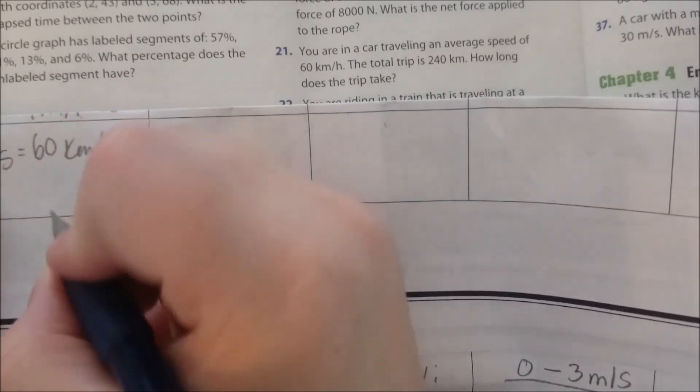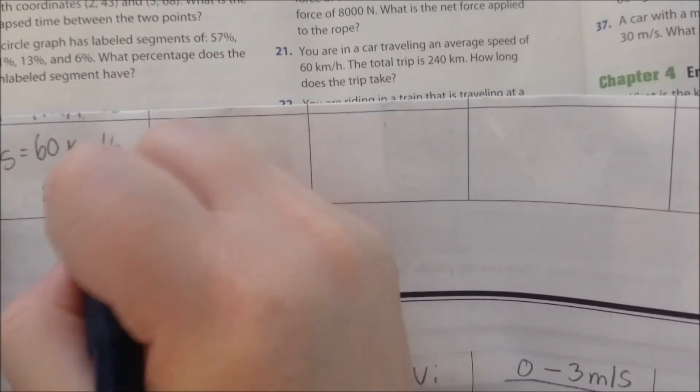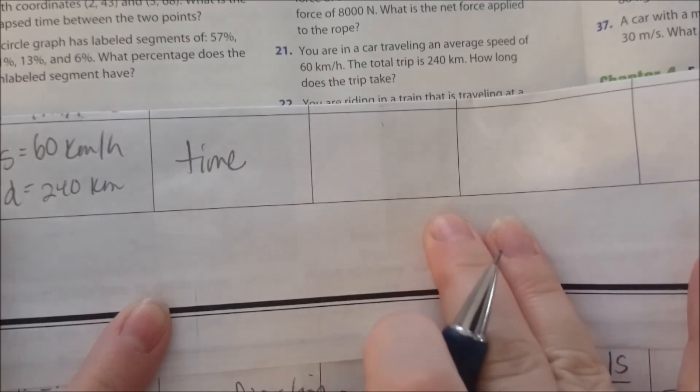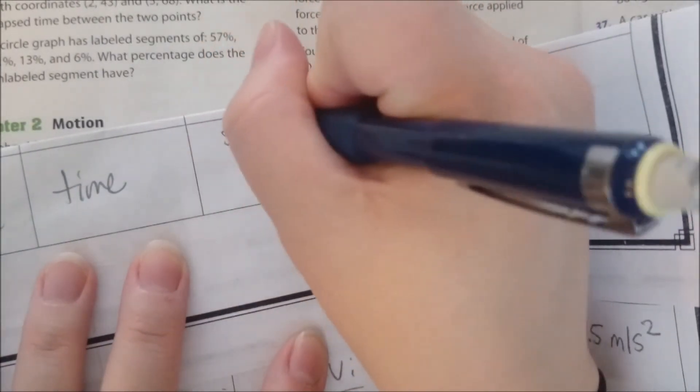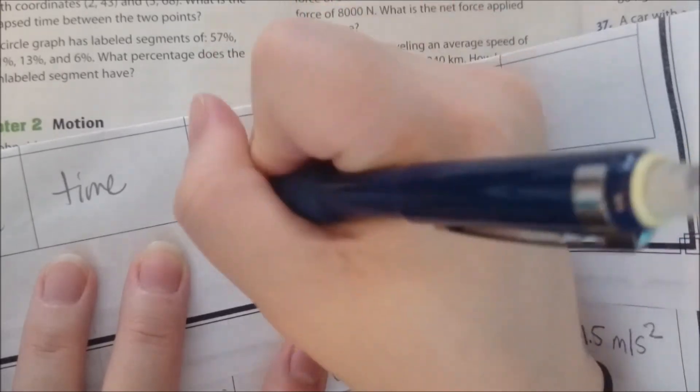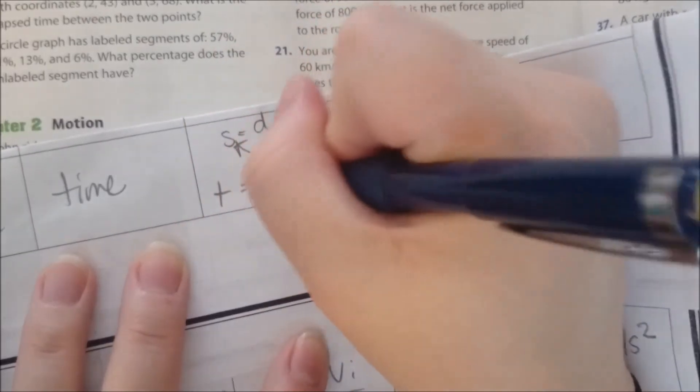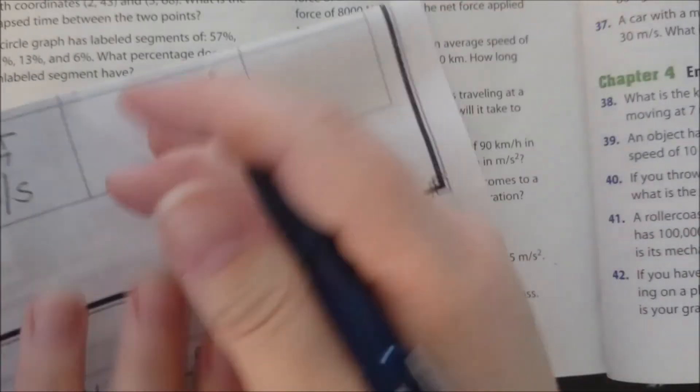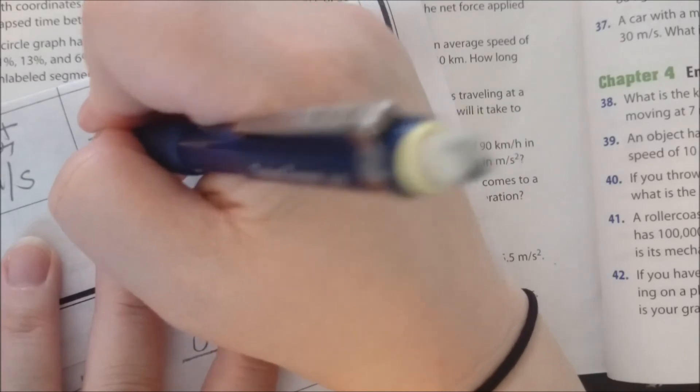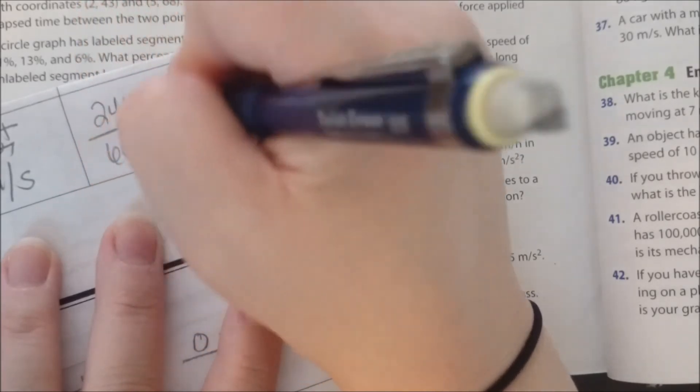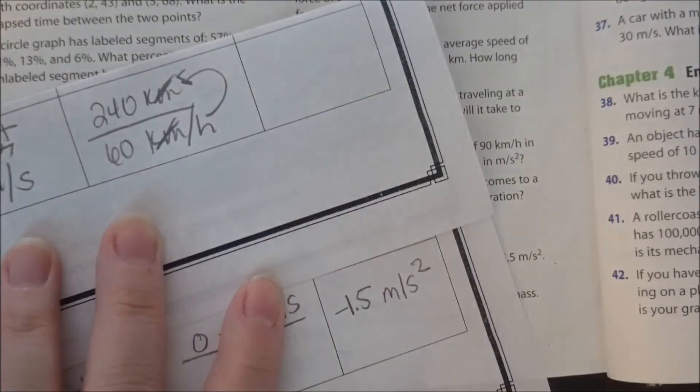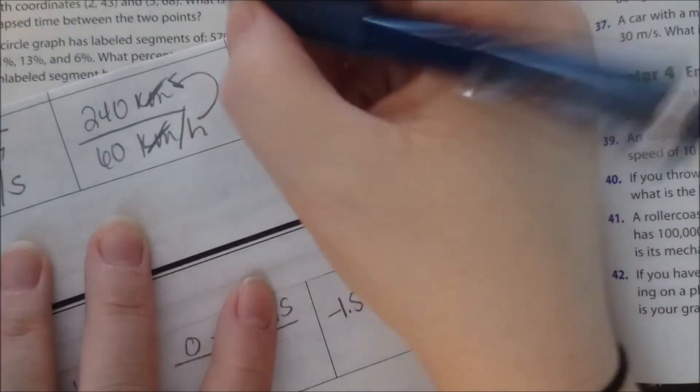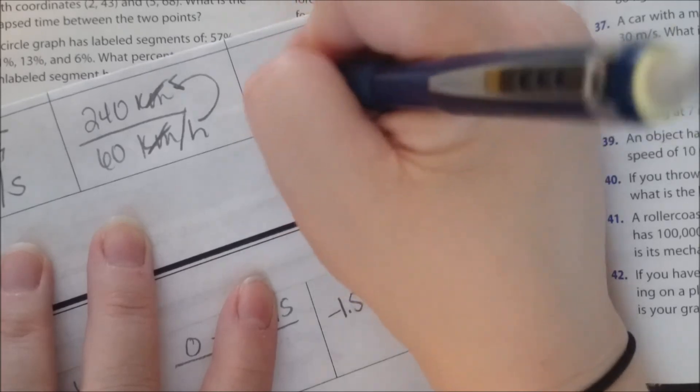And we know the total trip is 240 kilometers, and kilometers is distance. So we're trying to find time. Speed is distance over time—time and speed switch spots—so time is distance over speed. So we have 240 kilometers over 60 kilometers per hour. The kilometers cancel out, the hours go up. So 240 divided by 60 is four hours.